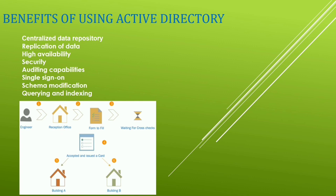Auditing capabilities. Setting up advanced security policies will not be enough to protect your identity infrastructure. Periodic audits will help you understand new security threats. Active Directory allows you to capture audit events occurring in your identity infrastructure — these can be related to user authentication, directory service modification, or access violation. It also helps you collect data from a centralized location, which will help you troubleshoot authentication and authorization issues users may have.